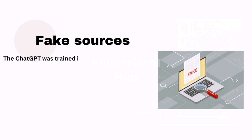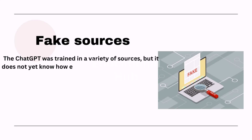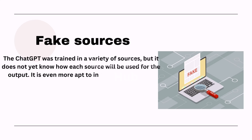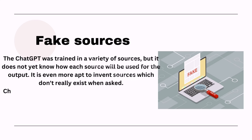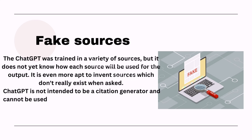Third, fake sources: ChatGPT was trained on a variety of sources, but it does not know how each source will be used in its output. It is apt to invent sources that don't really exist. Furthermore, ChatGPT is not intended to be a citation generator and cannot be used to add properly formatted citations to your work.